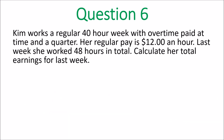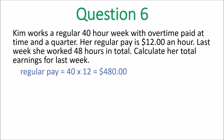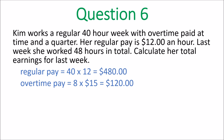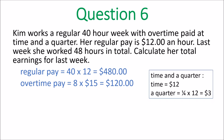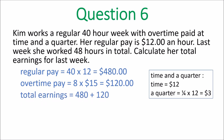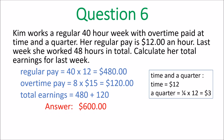Question 6: Kim works a regular 40-hour week with overtime paid at time and a quarter; regular pay is $12 an hour. Regular pay is 40 hours times $12, which is $480. Overtime: she worked 8 extra hours at $15 per hour — time and a quarter means $12 plus a quarter of $12 ($3) equals $15. Overtime pay is 8 times $15 equals $120. Total earnings: $480 plus $120 equals $600.